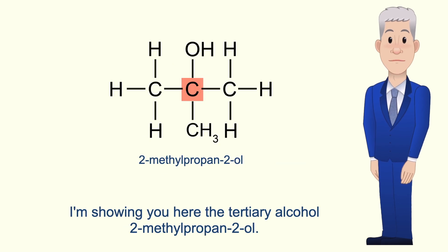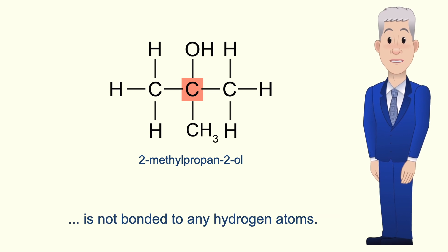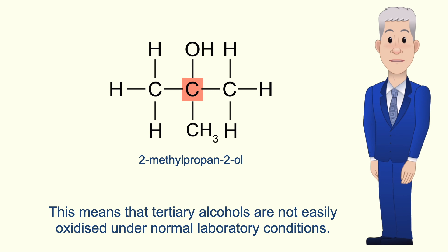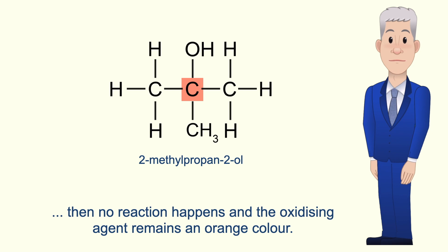Here is the tertiary alcohol 2-methylpropan-2-ol. In tertiary alcohols the carbon atom bonded to the alcohol group is not bonded to any hydrogen atoms. So tertiary alcohols are not easily oxidized under normal laboratory conditions. If we heat a tertiary alcohol in the presence of acidified potassium dichromate then no reaction happens and the oxidizing agent remains an orange color.